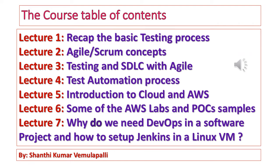Slide 3 — Course Table of Contents: Lecture 1: Recap the basic testing process. Lecture 2: Agile/Scrum concepts. Lecture 3: Testing in SDLC with Agile. Lecture 4: Test automation process. Lecture 5: Introduction to cloud and AWS. Lecture 6: Some of the AWS labs and POC samples. Lecture 7: Why do we need DevOps in a software project, and how to set up Jenkins in a Linux VM?